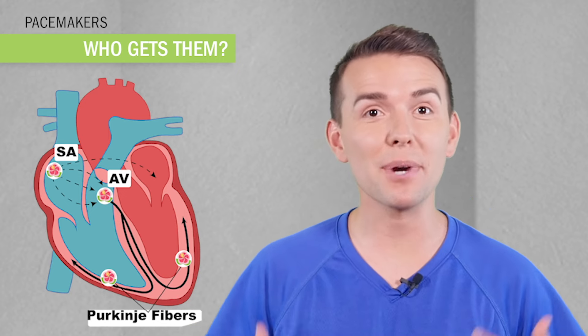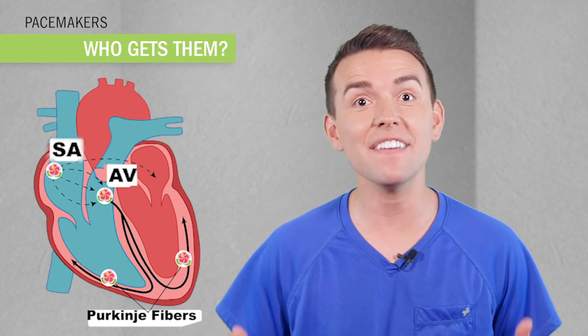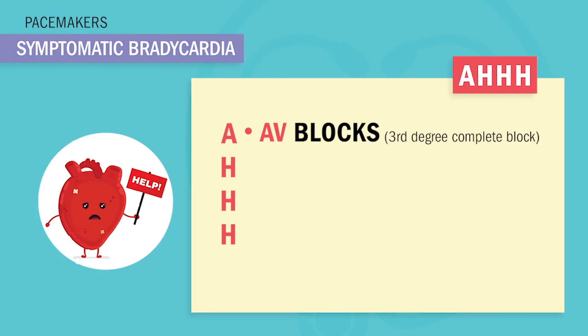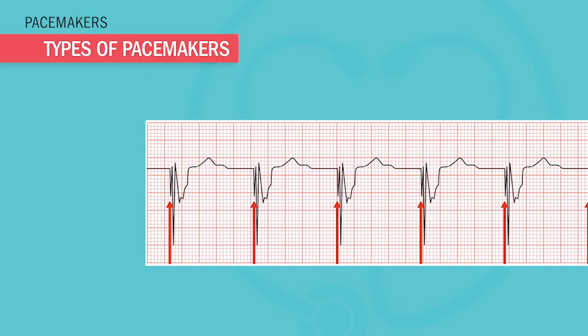We do get pacemakers for fast heart rate problems too, called tachyarrhythmias, but that's not as common. So who gets pacemakers? Symptomatic bradycardia is a big problem for patients who have an injured heart where their natural pacemaker — the SA or AV node — is not pacing correctly. Remember the acronym like you're having a CRISIS: A for AV blocks (most common for third-degree complete heart block), first H for heart failure, second H for heart attack, and third H for heart surgery.